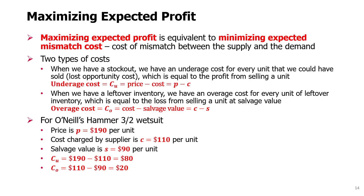The Newsvendor model maximizing expected profit. Once we gather economic inputs — the price, the cost, and the salvage value for our product — and once we have the demand forecast built as a distribution function, for example a normal distribution, we are ready to determine the order quantity that will maximize our expected profit.